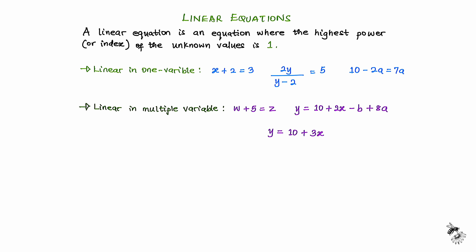The first one is a linear equation with one variable. For example, we have x plus 2 equals 3. In this first equation, we can see that the unknown variable is x. The power of this x is to the index of 1 — x raised to power 1. Because in x plus 2 equals 3, the unknown x has an index of 1, hence this is a linear equation in one variable.